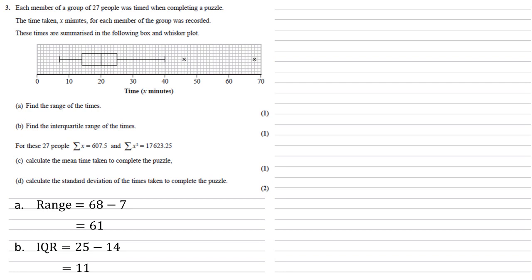For these 27 people, sigma x equals 607.5 and sigma x squared equals 17,623.25.